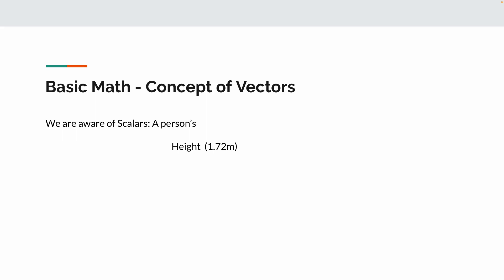We are already aware of scalars. Scalars are some numbers that you can use to explain something. For example, a person's height - the person's height is 1.7 meters. This is one scalar explaining the person.